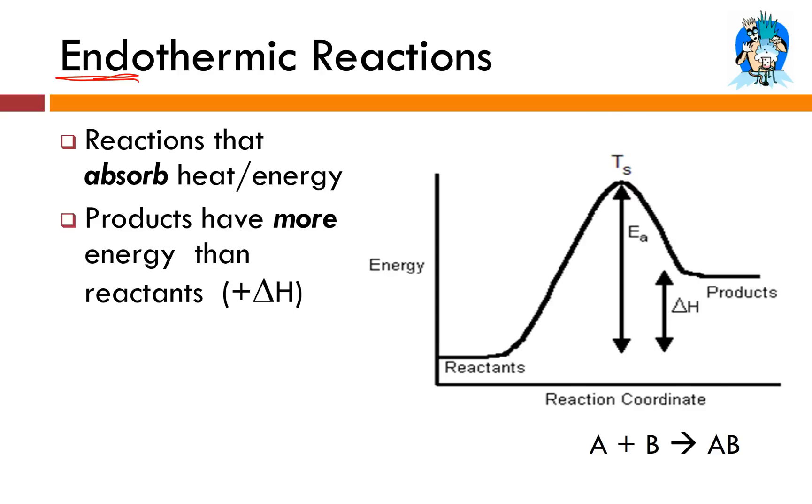In this case, the products have more energy than the reactants. So I have a larger number minus a smaller number. So I end up with a positive delta H. And if we look at what's going to happen to the surroundings as we go from reactants to products, we're absorbing energy. The system, I should say, is absorbing energy. Well, where is that energy coming from? It has to come from the surroundings. So what's going to happen to the temperature of the surroundings as an endothermic reaction occurs?